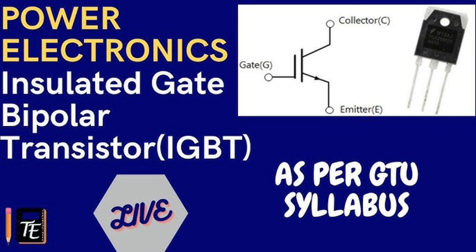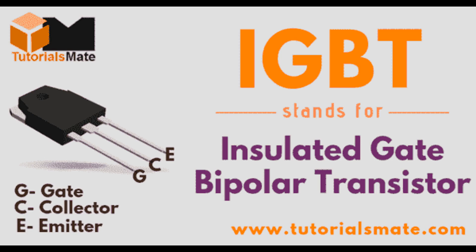Applications: Motor drives — used in controlling electric motors in industrial and automotive applications. Inverters — employed in power conversion systems such as solar inverters. Switch mode power supplies (SMPS) — IGBTs are used for efficient power switching. Electric vehicles — used in the power control systems of EVs to manage energy flow. In summary, the working principle of an IGBT revolves around gate voltage control that enables switching between off and on states, allowing the device to conduct or block high currents and voltages efficiently.